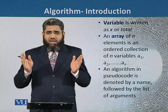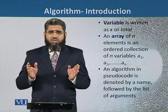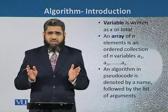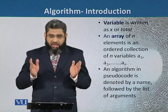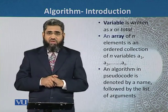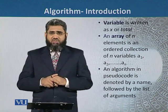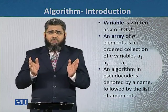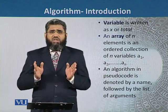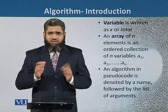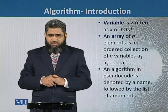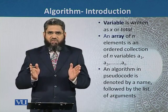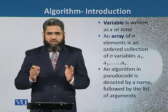In some algorithms, we need to know some basic terminology, like variables, arrays, and arguments. If we look at variables, they are written as X or total. A variable is a term in which we assign some numerical value, and this numerical value can be changed — and it definitely changes during the process of the algorithm.